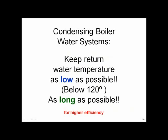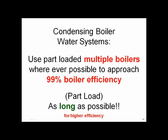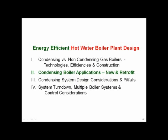Condensing boiler design summary: keep the return water temperature as low as possible, as cold as possible, as long as possible for more efficiency — definitely keep it below 120. If you can use multiple boilers, run your systems with multiple boilers part-loaded wherever possible to approach that 99% boiler efficiency. Run your boilers at part load as long as possible for higher efficiency.